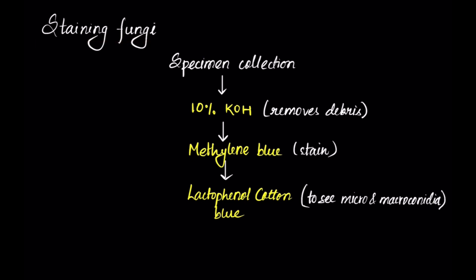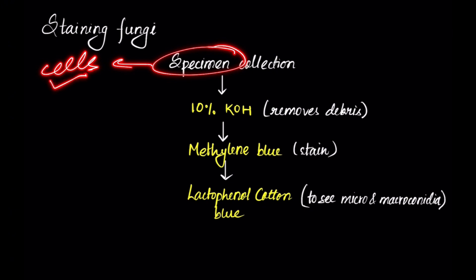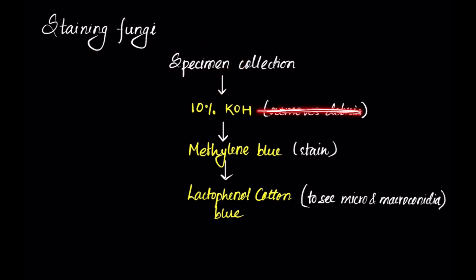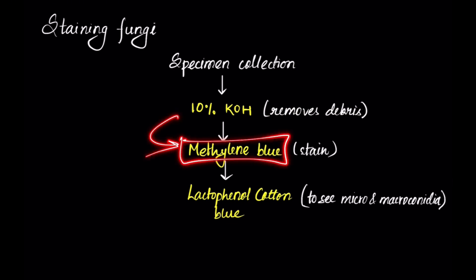When staining fungi, a specimen is first collected — either as skin scraping, hair follicle, or a piece of nail, depending on where the fungi has infested. To this specimen, 10% KOH is added. The specimen contains fungal cells of interest as well as cells not of interest like epithelial cells. What 10% KOH does is remove the cells that are not of interest and debris.